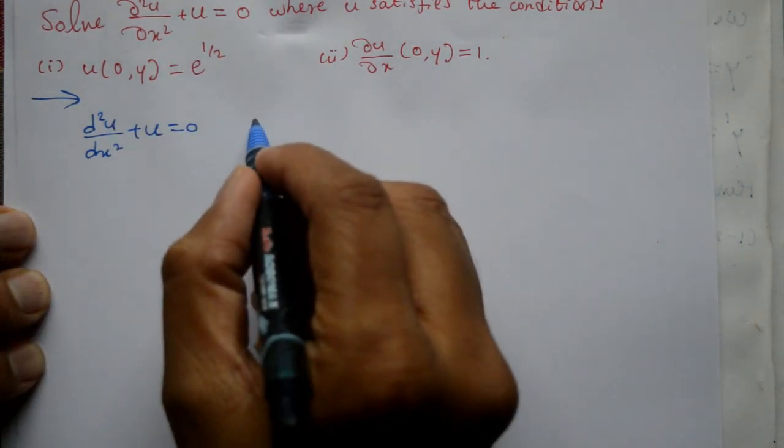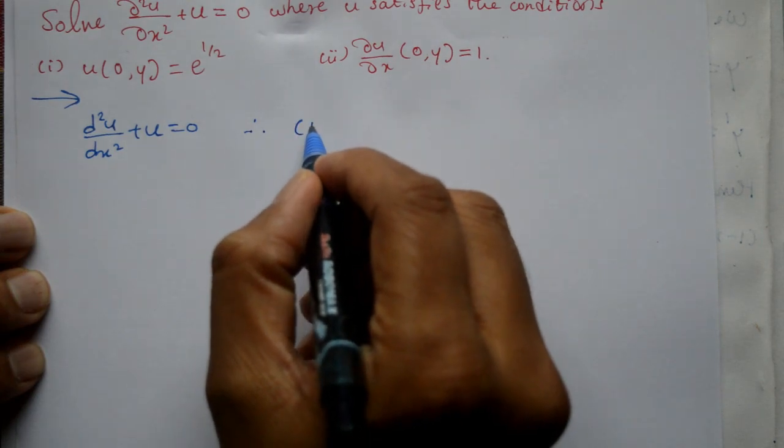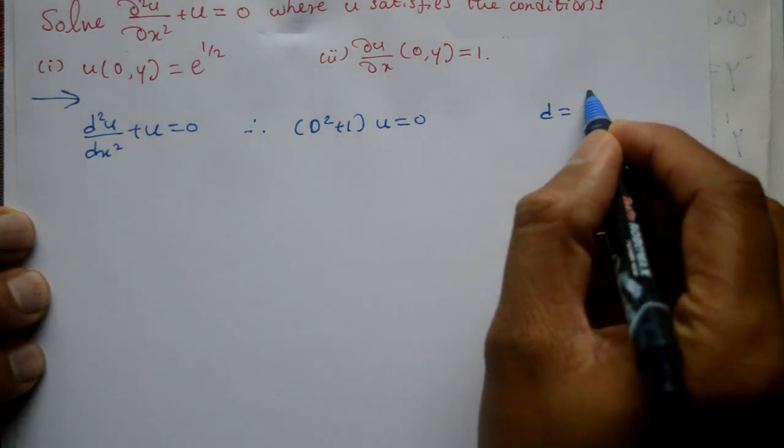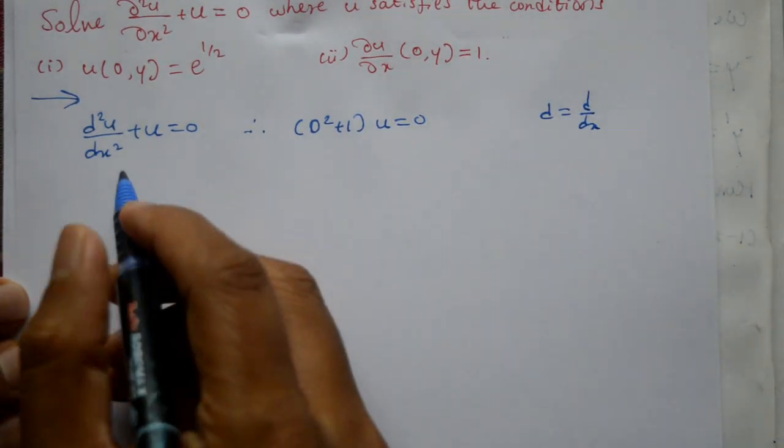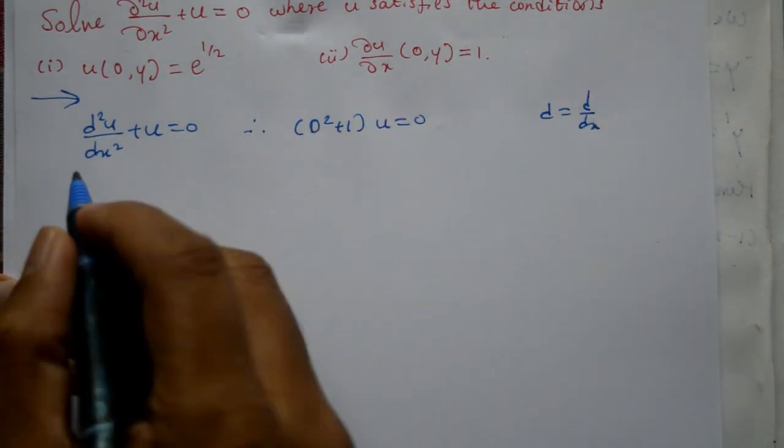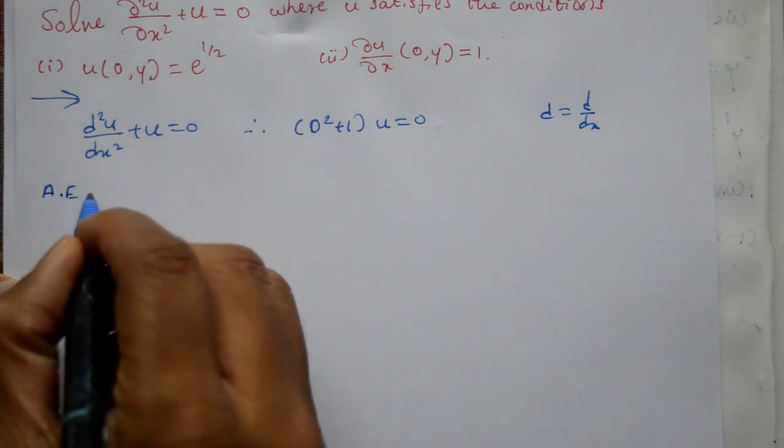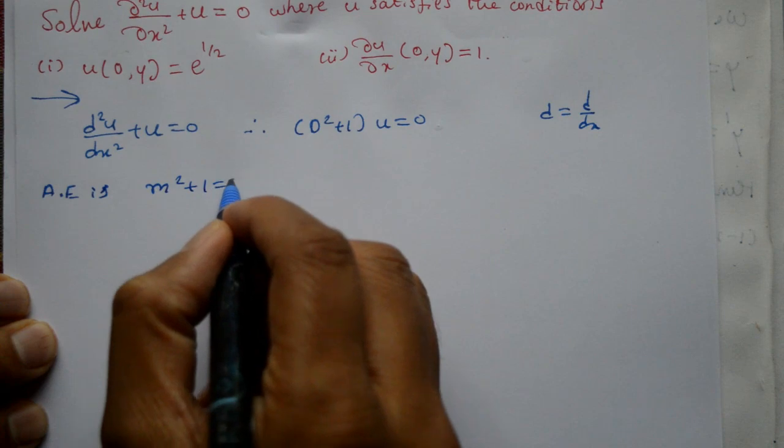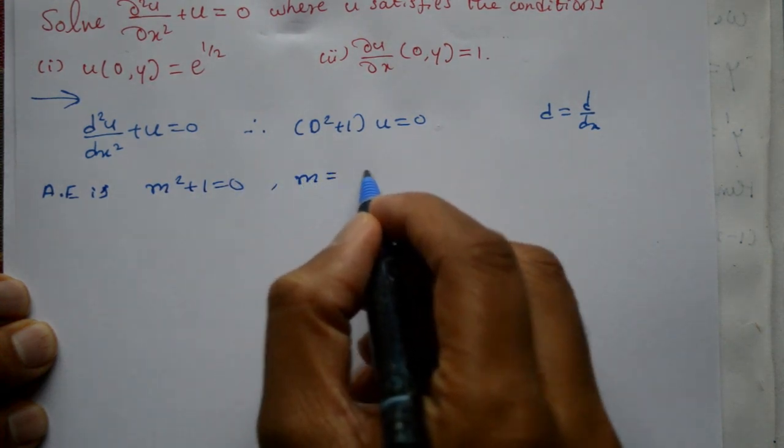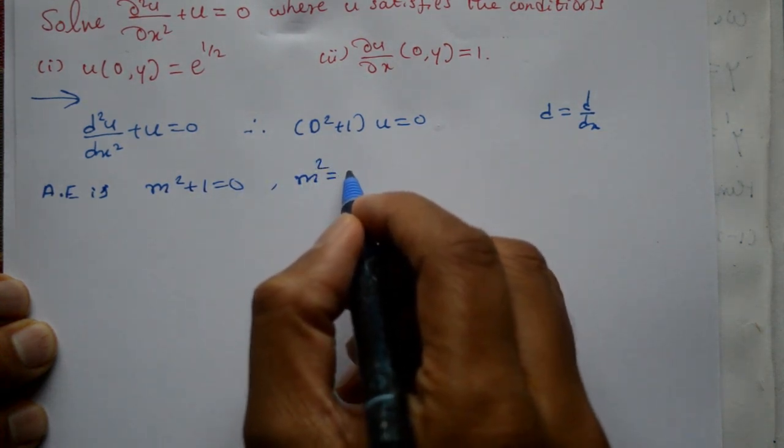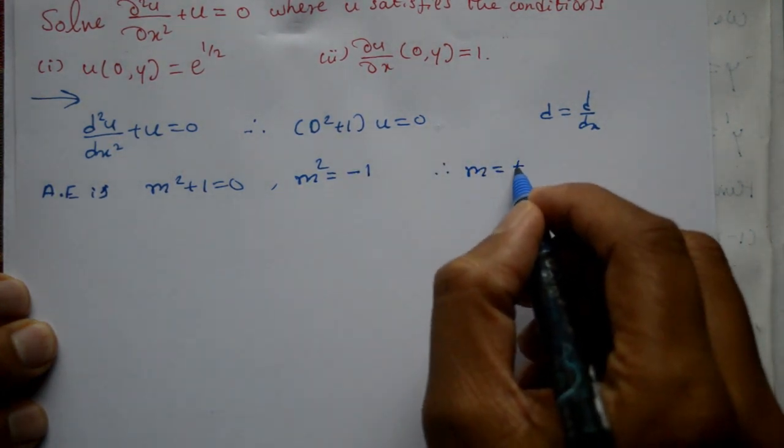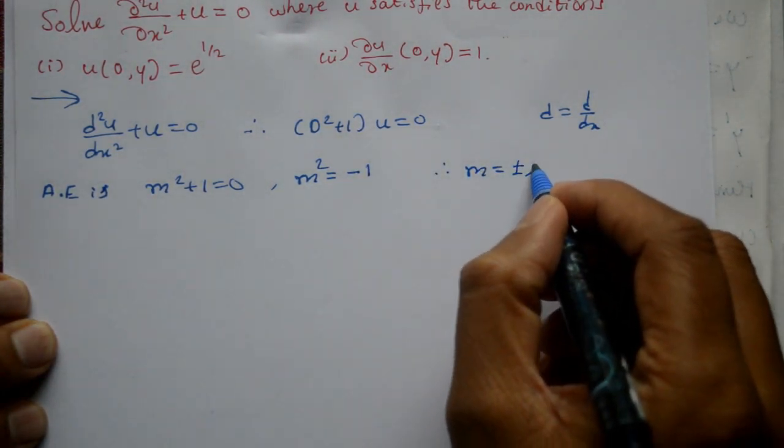We can write this as (D² + 1)u = 0 where D stands for d/dx. Now find the roots. The auxiliary equation is m² + 1 = 0, so m² = -1, or m = ±√(-1).